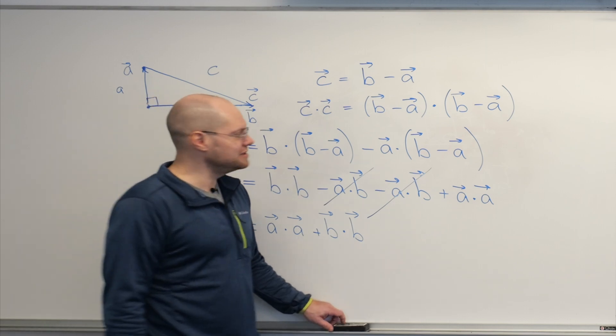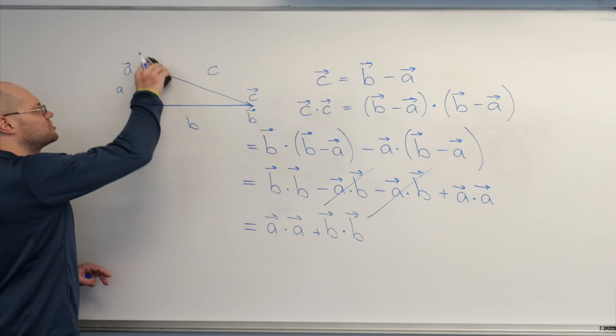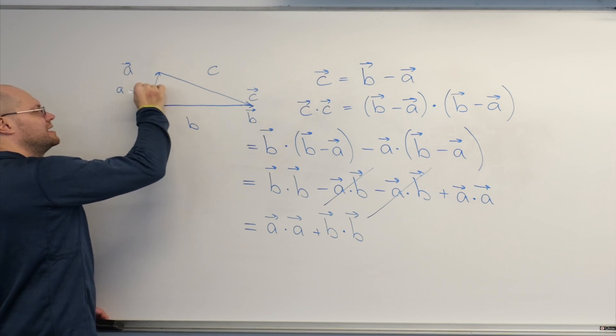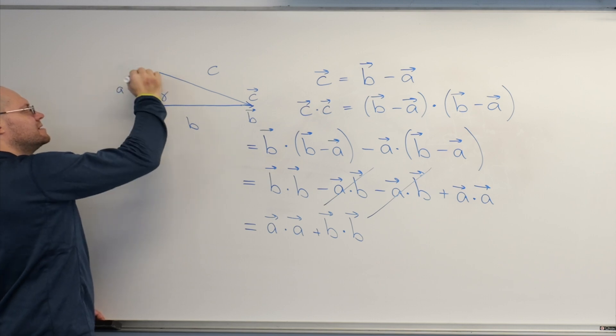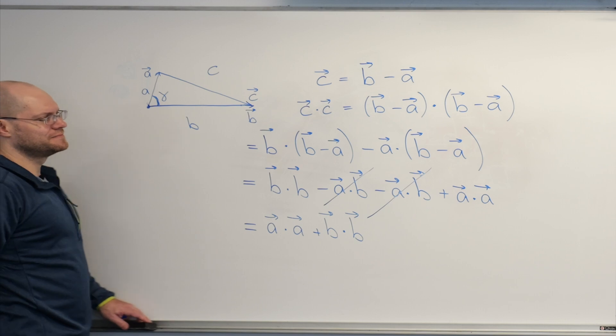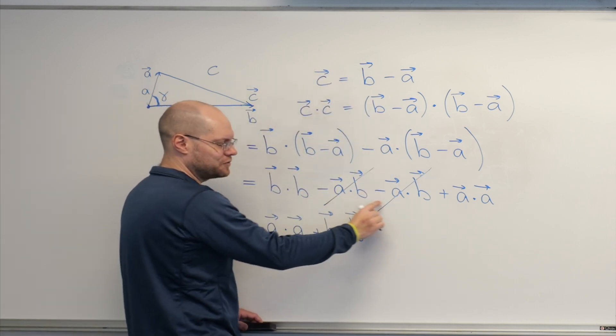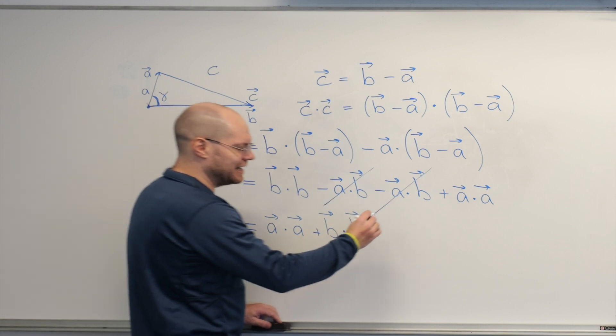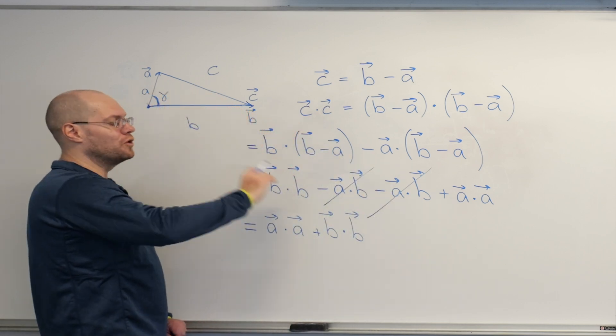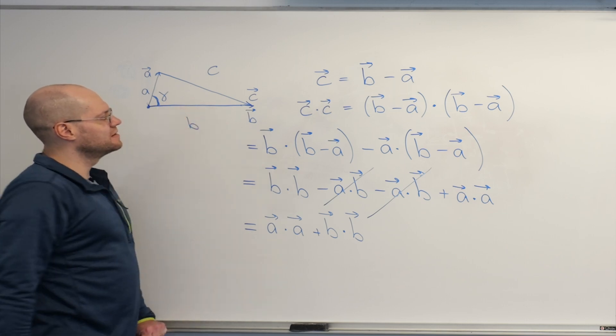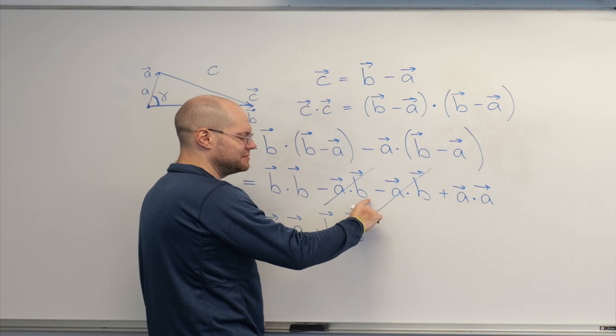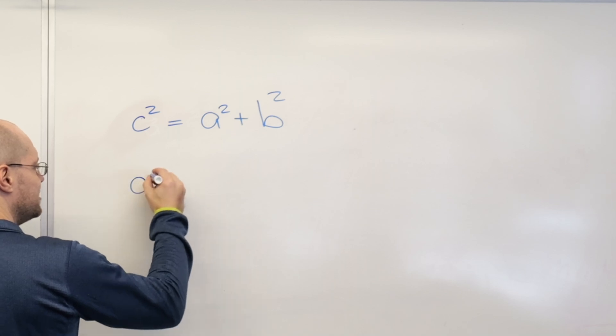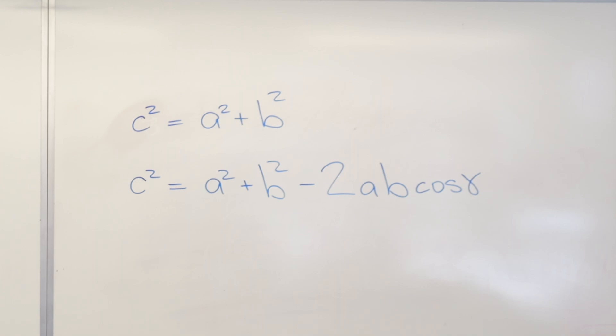Now for the law of cosines, it's the exact same thing except this triangle doesn't need to be a right triangle. Now this can be an arbitrary angle. This is still length A. The angle is now gamma. This is still the vector A. And it's length A. And everything remains valid except for the crossing out of the two dot products which are equal. So now they survive. And we now remember what these dot products are in terms of the geometric quantities. And of course, it's the length of A times the length of B times the cosine of the angle between them. And there is your minus sign. And there is your law of cosines.